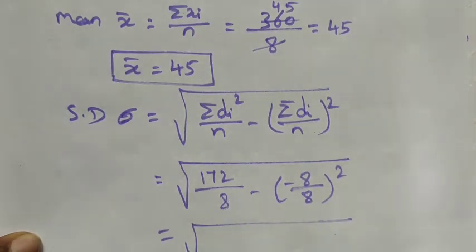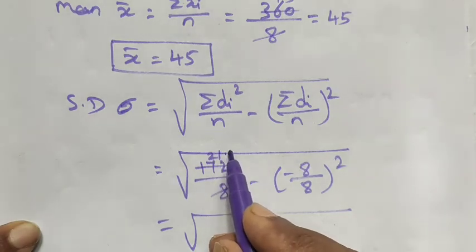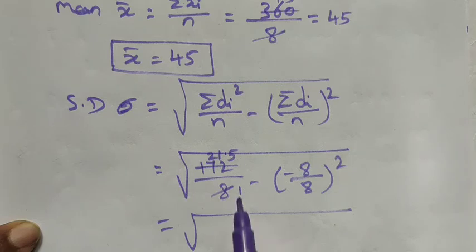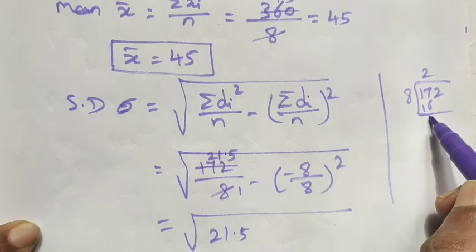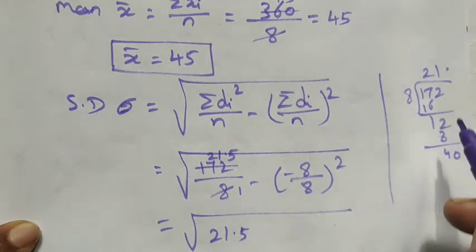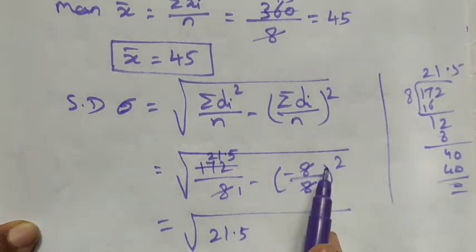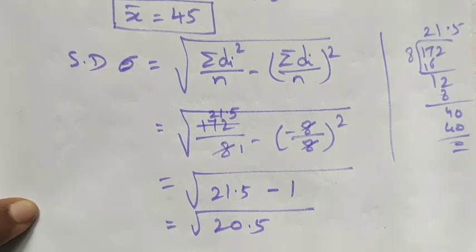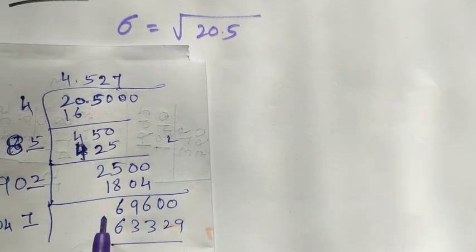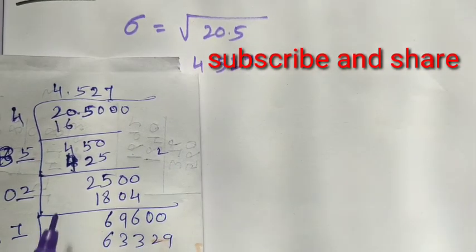172 divided by 8 = 21.5. And (−8/8)² = (−1)² = 1. So σ = √(21.5 − 1) = √20.5. Finding the square root of 20.5, we get approximately 4.527.